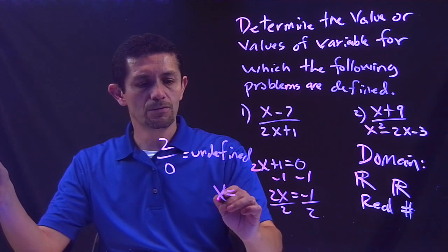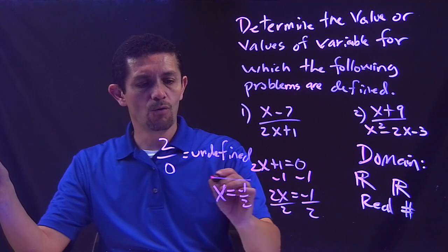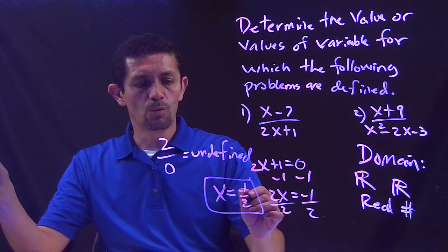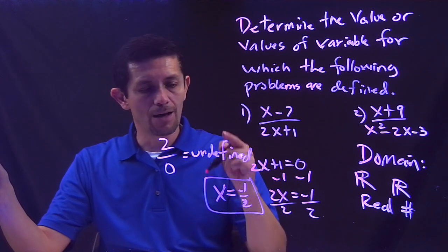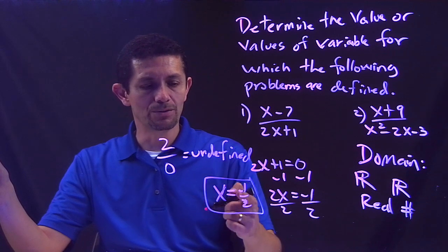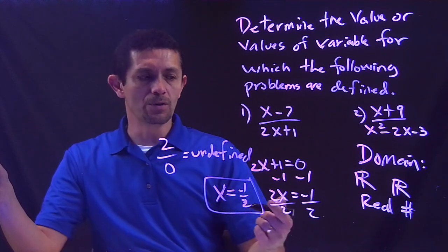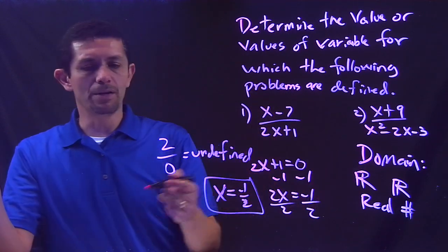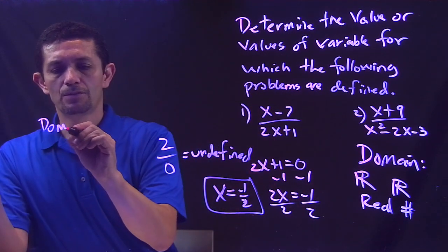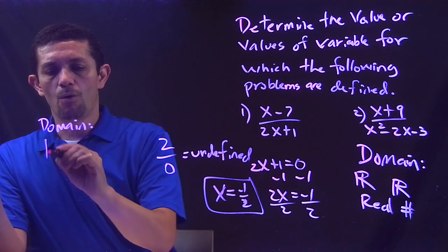X is equal to negative 1 over 2. So do I want this value or I don't want it? I don't want that value, remember, because this value will make my denominator 0 and therefore it will be undefined, which is what I don't want. So let's go back to my domain.